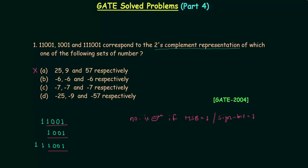We can also see that 1001 is common and we have a repeated MSB. Here 1 is repeated — in this case repeated 2 times. So the MSB is repeated, and if we repeat the MSB or sign bit in 2's complement representation, the number does not change.